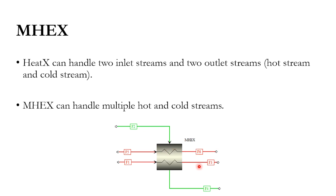In some cases you can specify both hot and cold outlet specifications. However, since there are three outlet streams, you can specify a maximum of two — the third will be computed. For example, you can specify F4 and F3, and F6 will be computed, or you can specify F3 and F6 and then calculate F4. This is a simple representation; in the upcoming video we will simulate a more complex process.